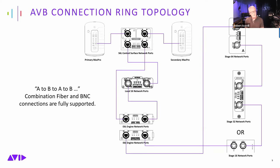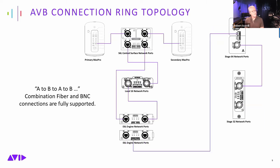The A-to-B loop protocol stays in play all the way through the ring. You can use both copper Cat5 and fiber optic connections, and mix them as needed. For a long haul from front-of-house to the stage rack area, use fiber; then interconnect local stage racks with Cat5. For example: take the long haul on the A port via fiber up to the B port fiber on the stage rack, then return fiber to the B port.